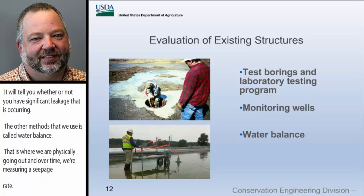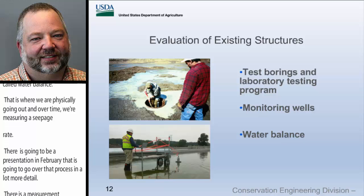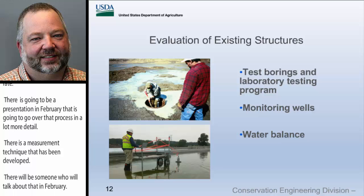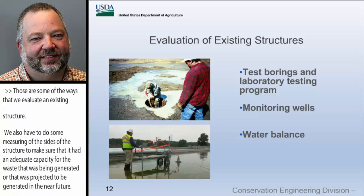There's a new measurement technique or sensor that's been developed, and someone will talk about that in February in more detail. Those are the ways we evaluate an existing structure's liner to see whether it meets standard. We'd also have to measure the size of the structure to make sure it has adequate capacity for the waste being generated or projected to be generated. That covers some basics about NRCS conservation practice standards and our standards for waste storage ponds and liners.